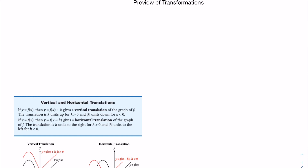A preview of transformations. The first type of transformation is vertical and horizontal translations. The definition is: if y is equal to f of x, then y equal to f of x plus k gives a vertical translation of the graph of f.